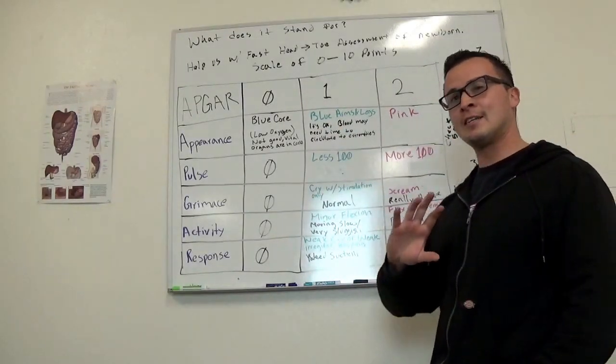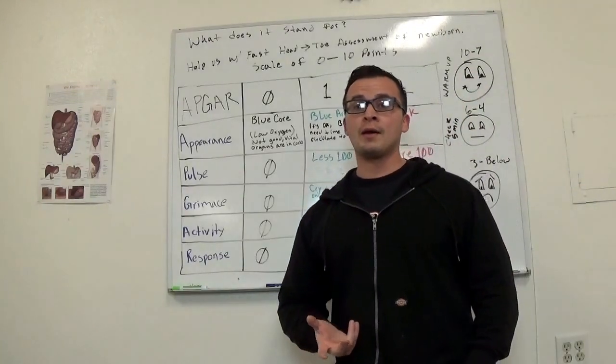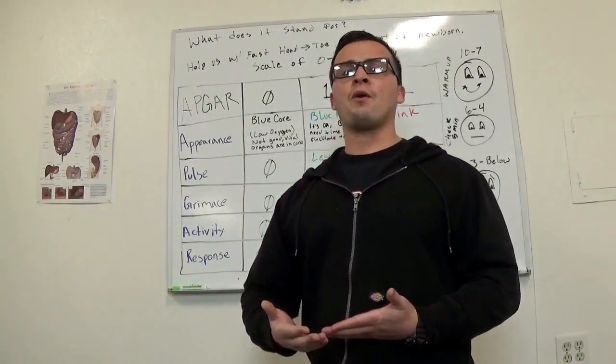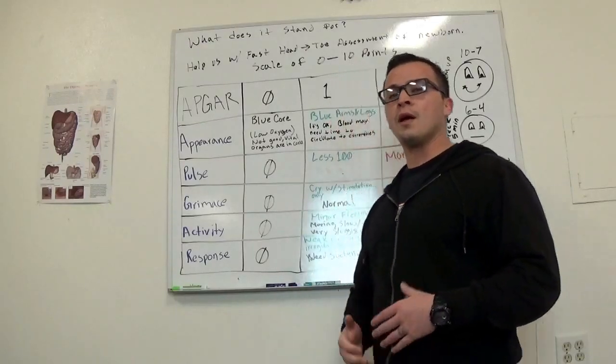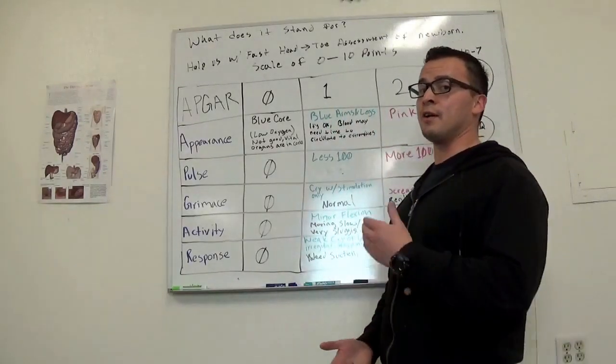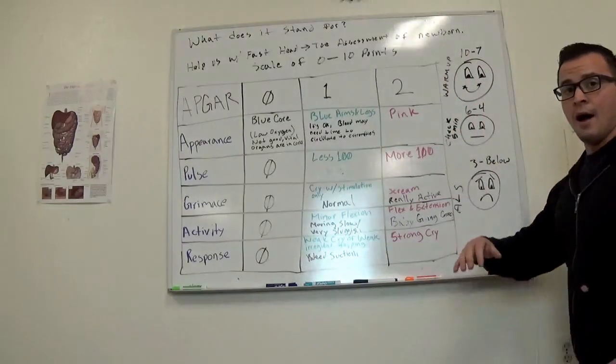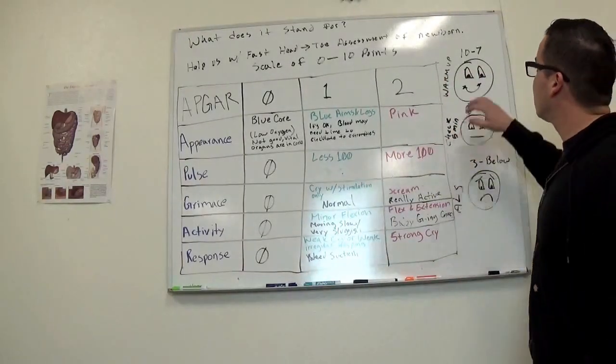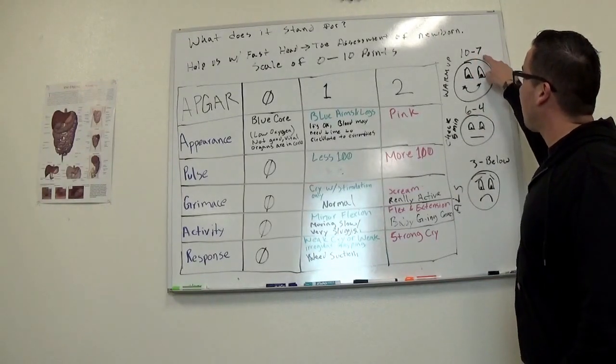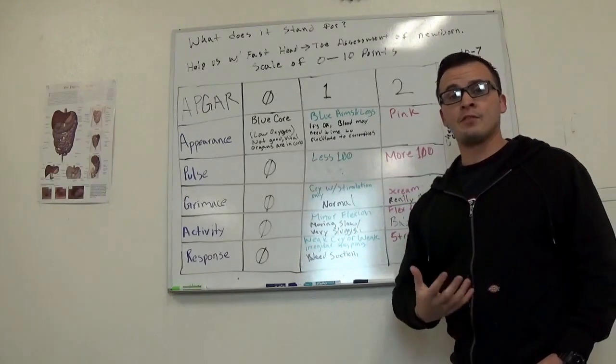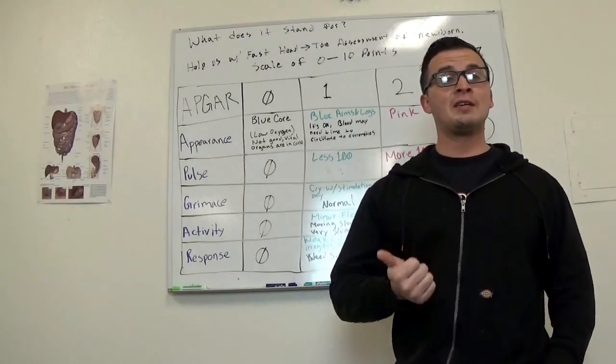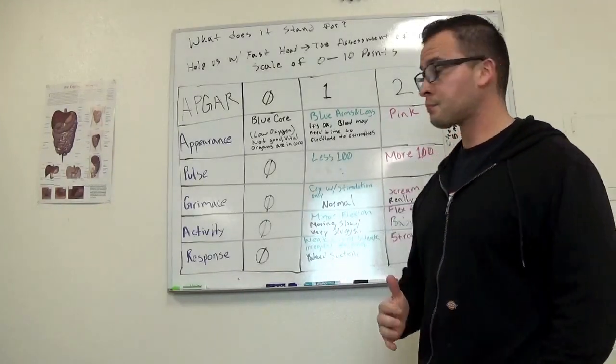I hope I did a good job explaining. If not, go ahead and leave a comment below and let me know what you need, or what you want me to explain further on, or kind of break down more, and I'll be more than happy to do that for sure in another video. So as far as the ranges, if your baby ranges between a 10 and a 7, when the baby comes out after one minute, just warm that baby up, that baby should be good to go. It shouldn't be a big issue.